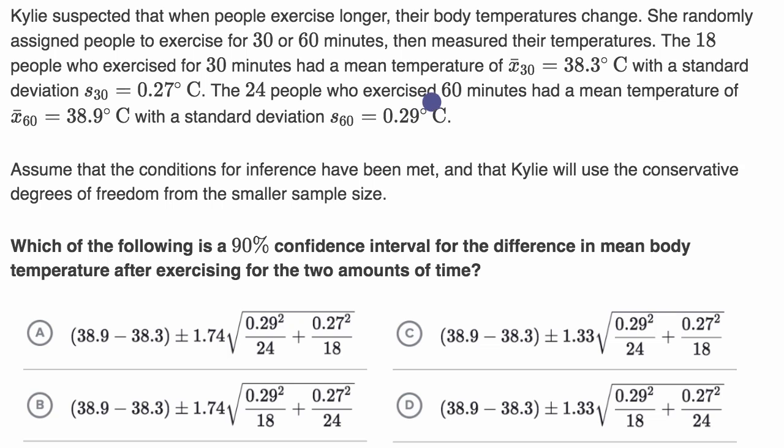The 24 people who exercised 60 minutes had a mean temperature of 38.9 degrees Celsius with a standard deviation. This is once again, these are both sample means and sample standard deviations of 0.29 degrees Celsius.